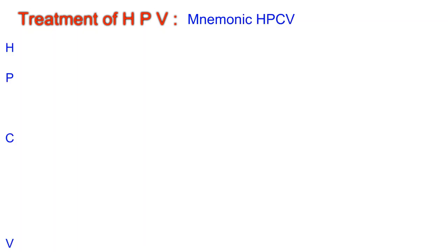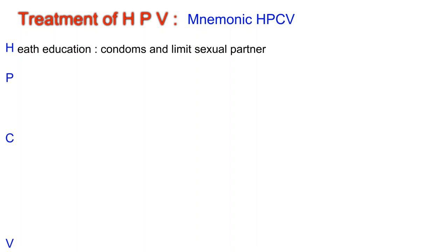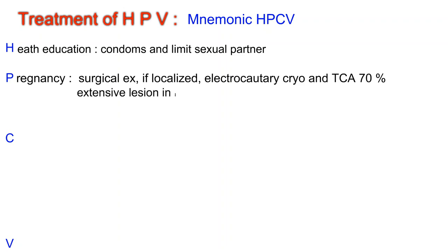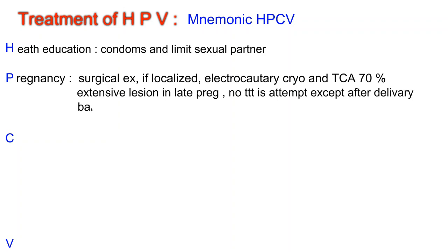Treatment of HPV — mnemonic HPCV. H: Health education about condoms and limiting sexual partners. P: In pregnancy, use surgical excision if localized, electrocautery, cryotherapy, or trichloroacetic acid 70%. If the lesion is extensive in late pregnancy, no treatment is attempted except after delivery. Any baby delivered from an infected mother should be examined and followed up for laryngeal papillomatosis.